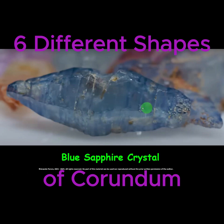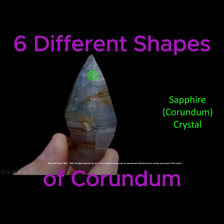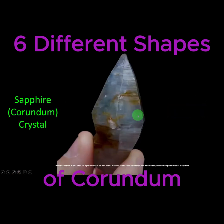You can see the shapes. Another sapphire crystal. See the double pyramid shape and the transverse stripes. Look at this — double pyramid shape, hexagonal, transverse stripes here.